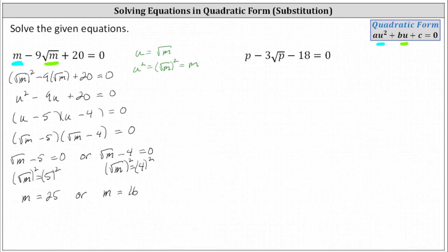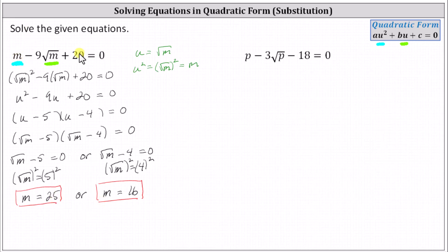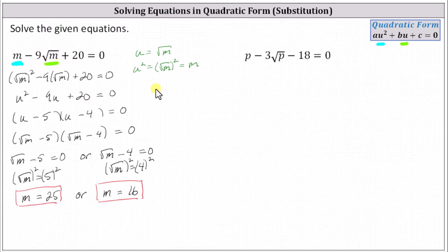The first equation has two solutions, but because it does have a square root, we should verify both solutions actually work. We substitute 25 for m in the original equation, and then substitute 16 for m in the original equation, and make sure the left side equals zero. Notice both solutions do satisfy the equation.